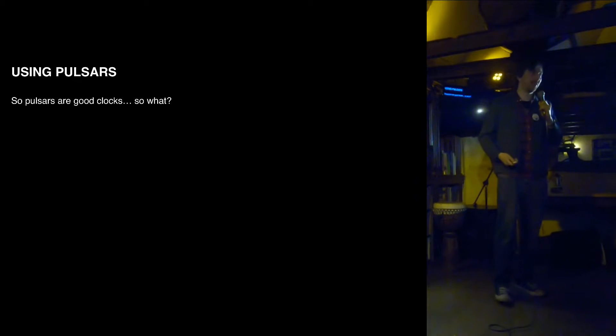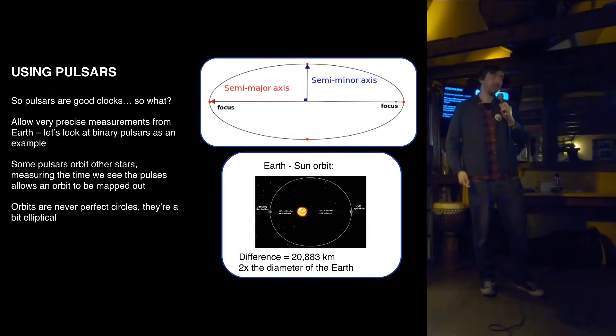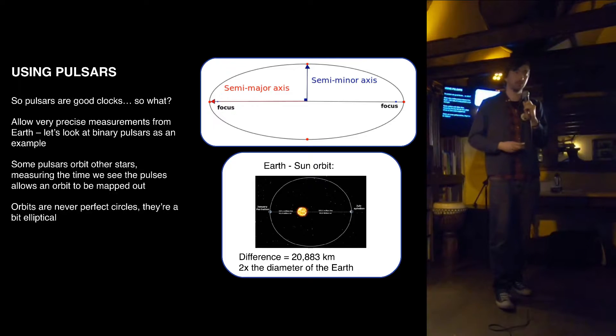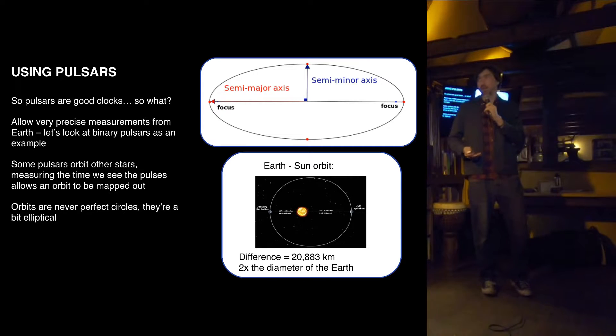So what? They're like clocks in space. Great. Really interesting. Well, it turns out that it's very useful having extremely precise clocks distributed all over the galaxy and in a lot of cases in extreme environments. Because we can use them for tests of physics that we can't do on the Earth or in space with other means. So I'm just going to give you a little example here.